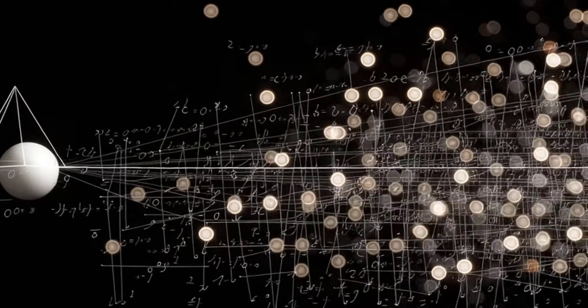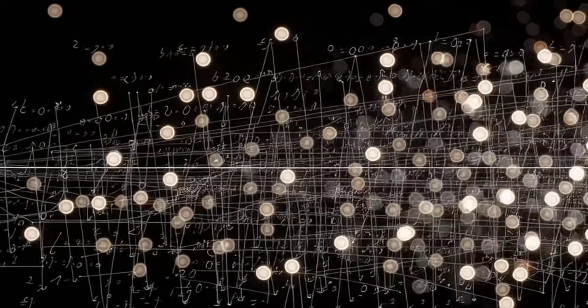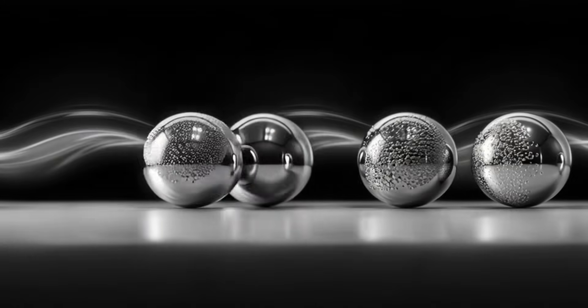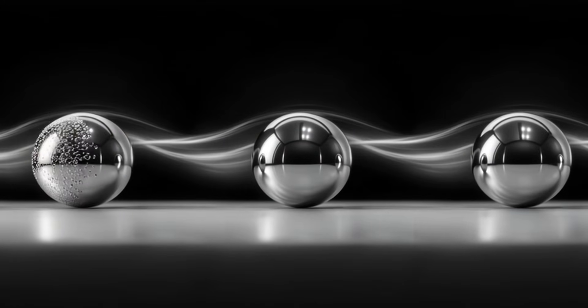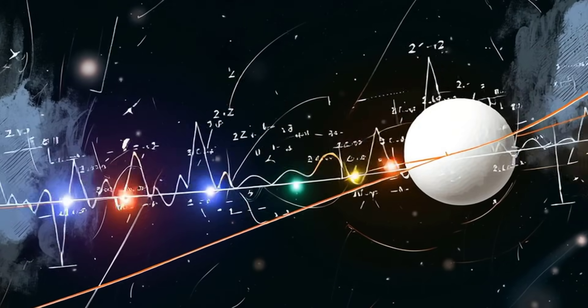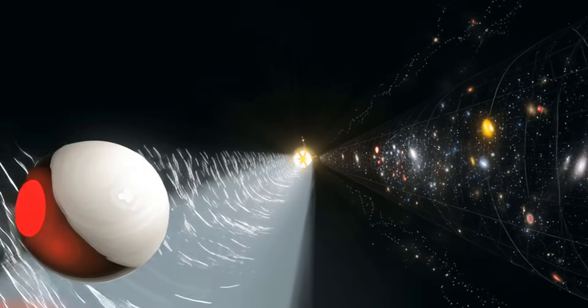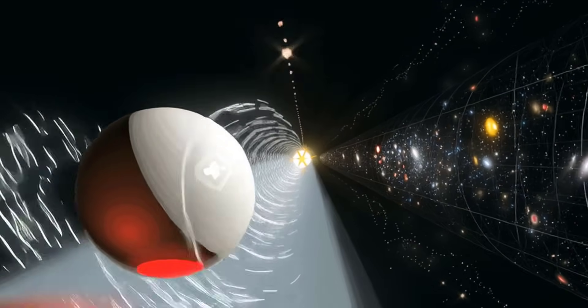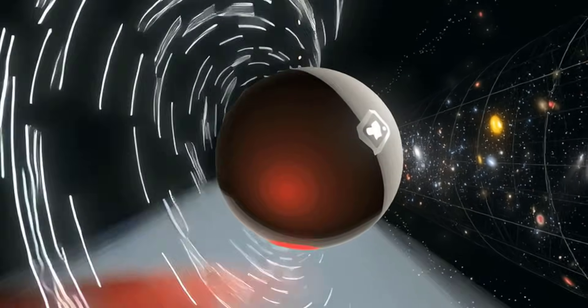At larger scales, however, the story changes. As the particle size increases to hundreds of micrometers, inertia begins to compete with viscosity. This pushes the system into an intermediate Reynolds range, where flows no longer look perfectly smooth or reversible.